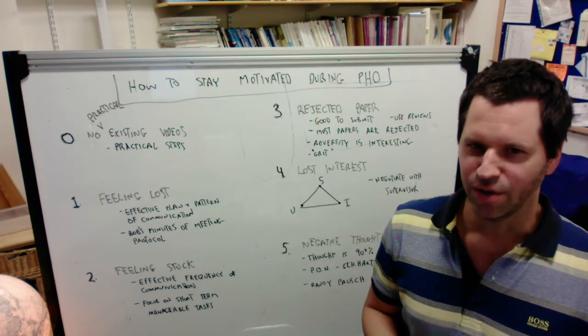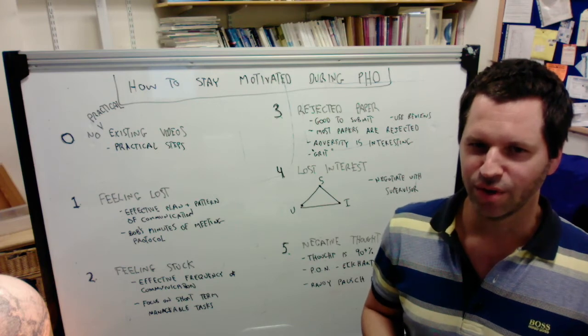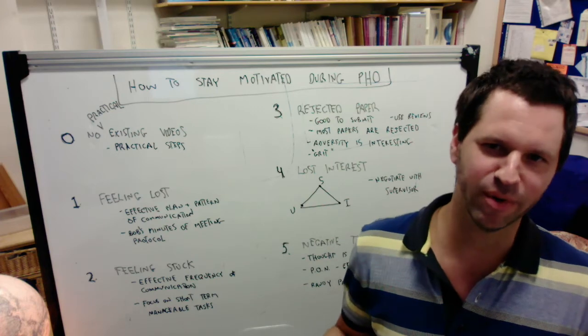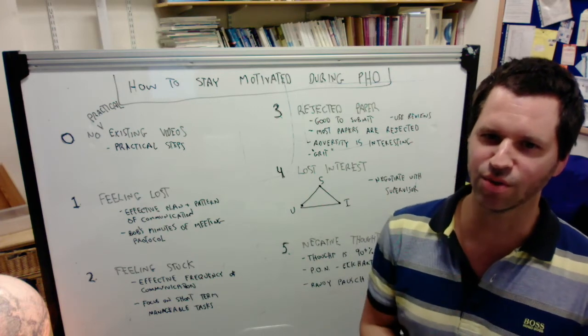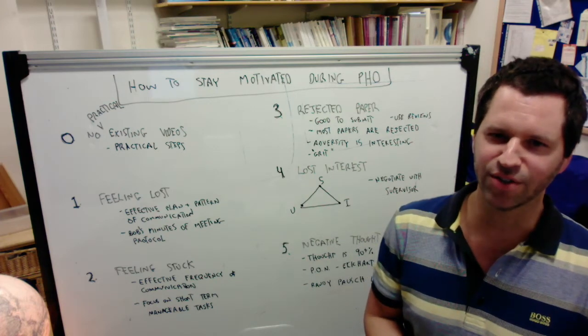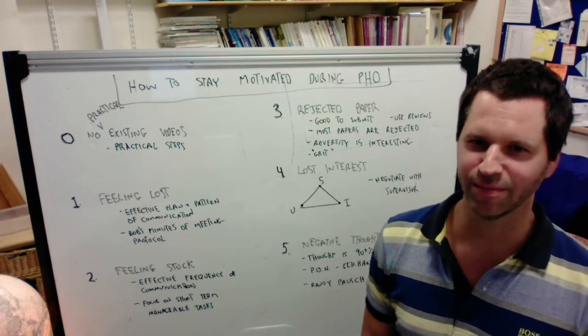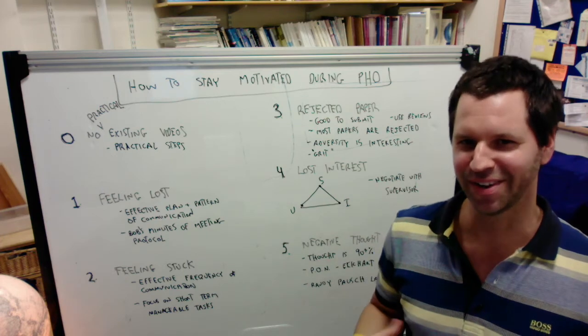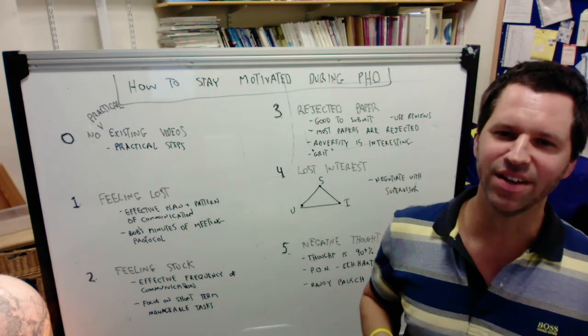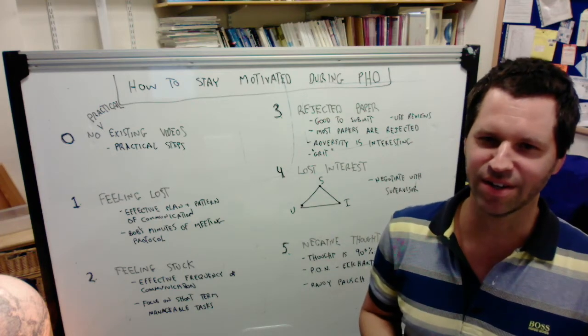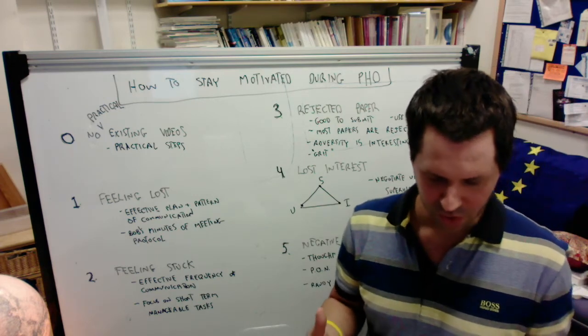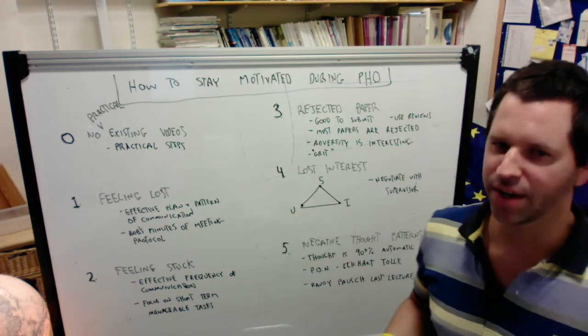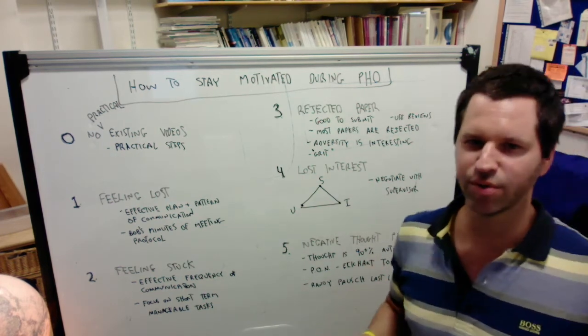You can demonstrate that as a fun exercise. You can just tell yourself to stop thinking. Or you can tell somebody else just stop thinking. And you quickly discover that it's very, very difficult. So thought is basically, or most thought is automatic. I would say it's at least 90% automatic.